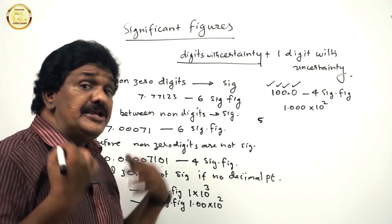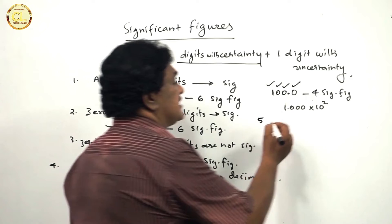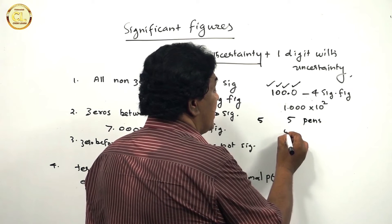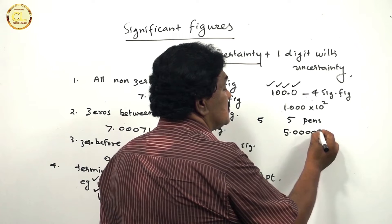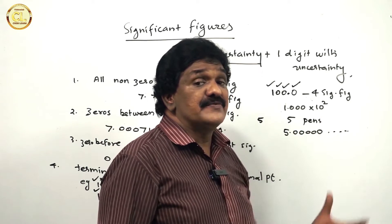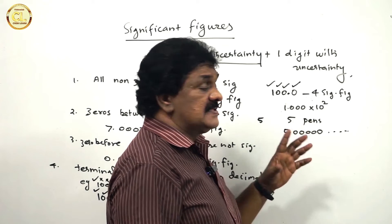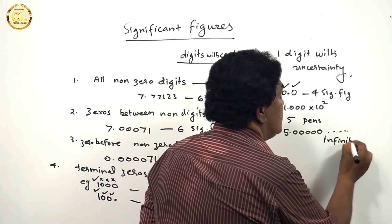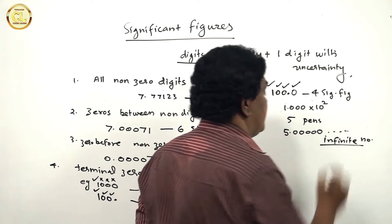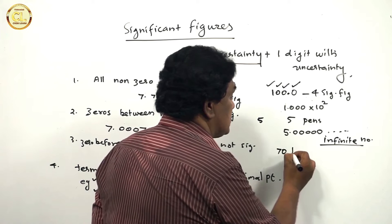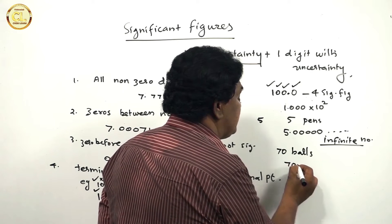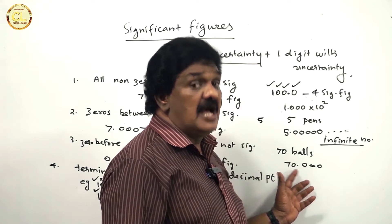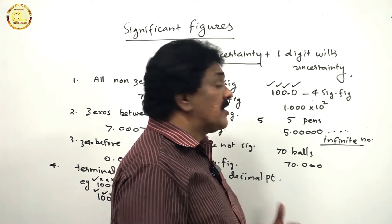Fifth point: counting numbers have an infinite number of significant figures. For example, five pens means there are 5.000... zero, zero, zero, zero, etc. — there are infinite zeros after the decimal point, and therefore infinite significant figures.